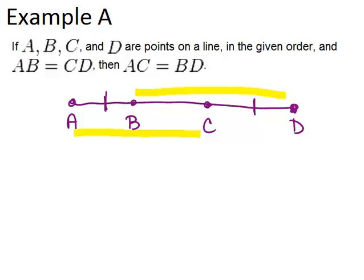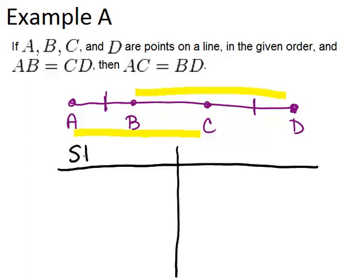So let's set up a two-column proof in order to organize our thinking. When you do a two-column proof, you want to start by drawing out your two columns and labeling them statements on the left and on the right all of your reasons, because you have to give a reason for each of your steps.